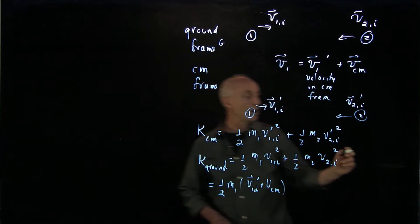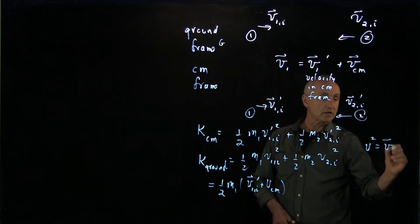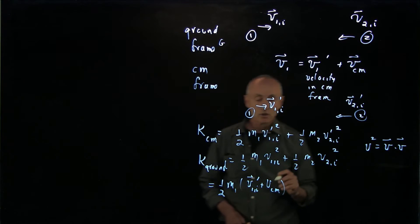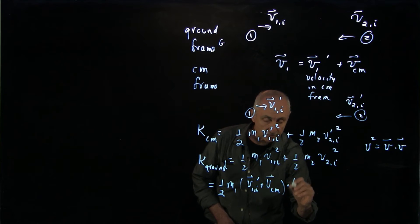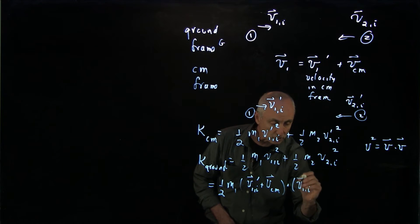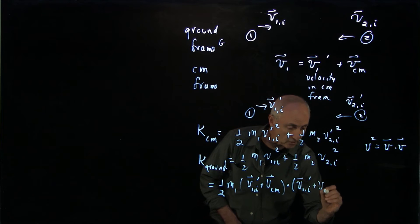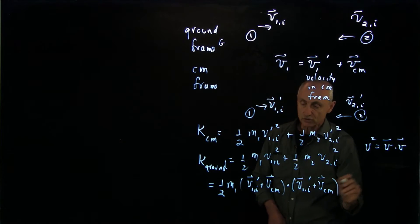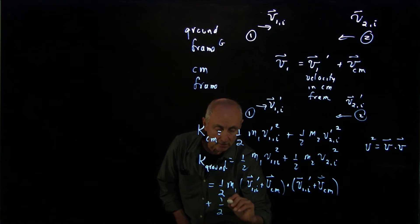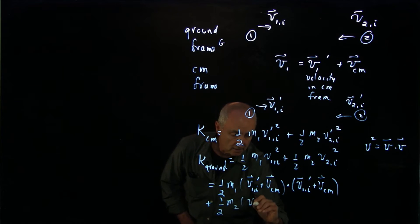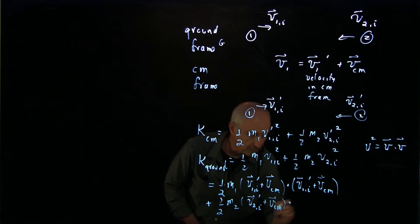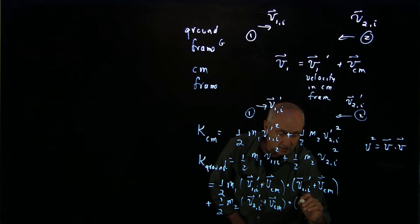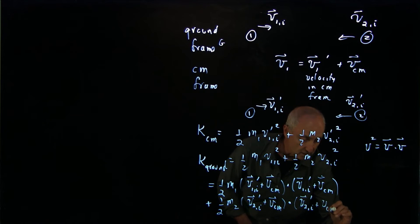Remember that any quantity squared is the dot product, v dot v. So I'm going to dot this with itself, v1 initial prime plus v center of mass. And I have the second term, which looks identical to this first term. I'll write it all the way down here: 1 half m2 v2 initial prime plus vcm, vector scalar dot product of v2 initial prime plus vcm.